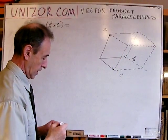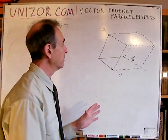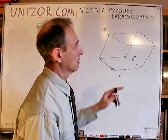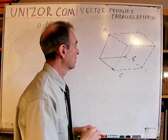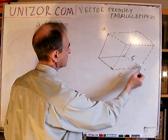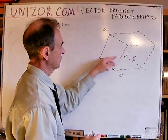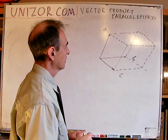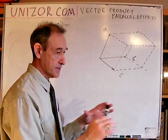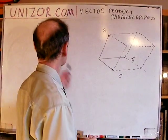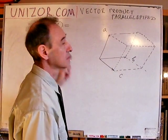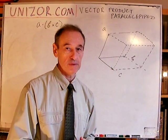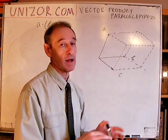Now let's build a parallelopiped based on A as the third dimension. Do you see this parallelopiped? These are vertical edges, and this is a horizontal plane B and C.